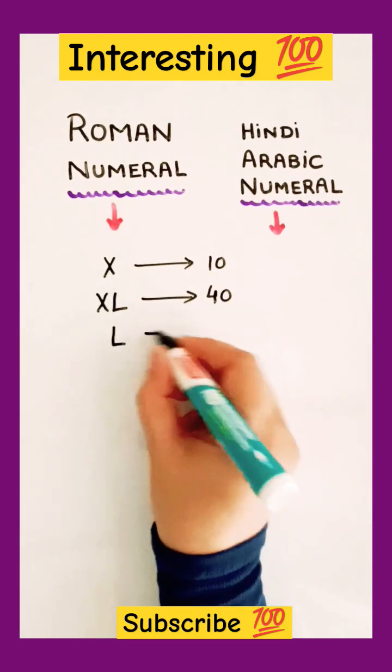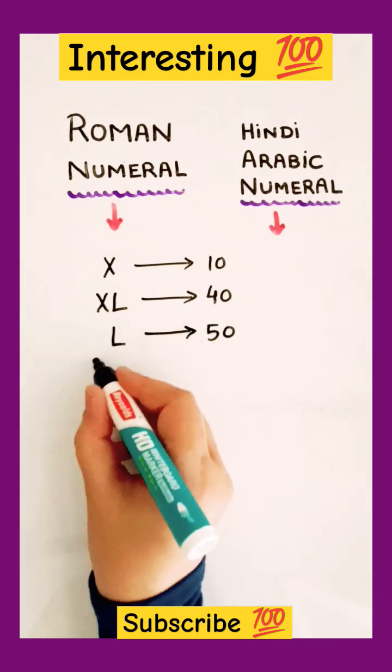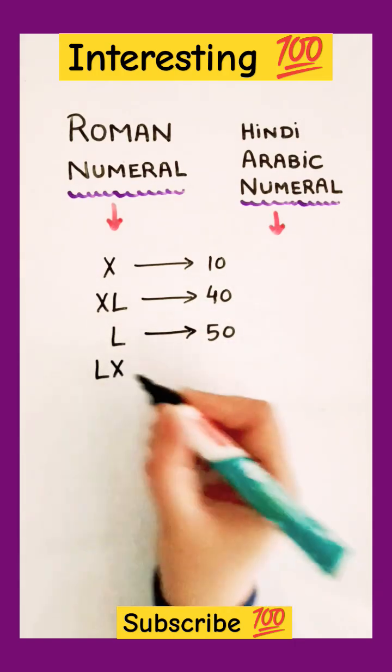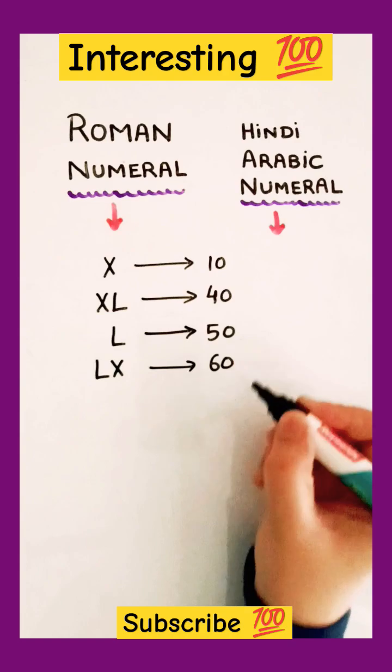Simply L, that means 50, right? Now, XL was 40. What is this? LX. This is 60.